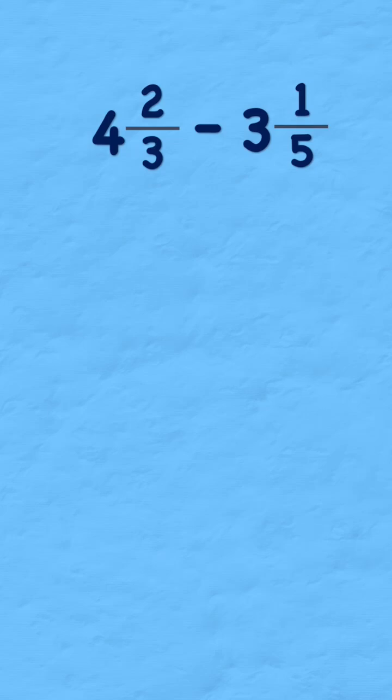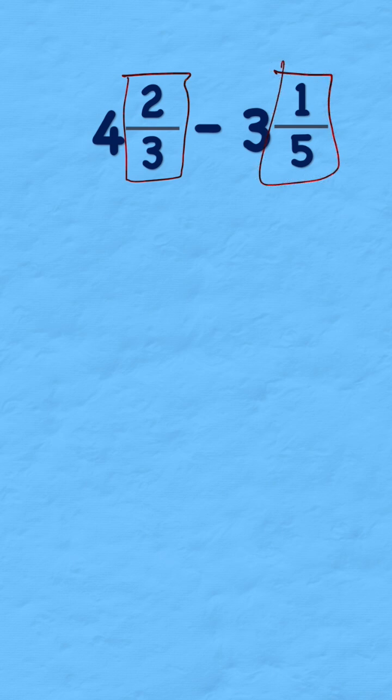How do I subtract one mixed number from another? Well, first thing I have to do is understand that I can't add thirds to fifths. So I have to find a common denominator.